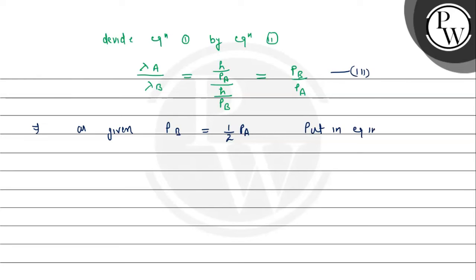Put in equation 3, we'll get Lambda A upon Lambda B is equal to 1 by 2 p_A upon p_A. p_A cancels, so Lambda A upon Lambda B equals 1 by 2, so from here the value of Lambda B is